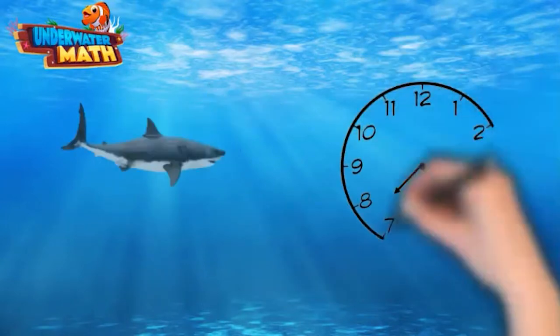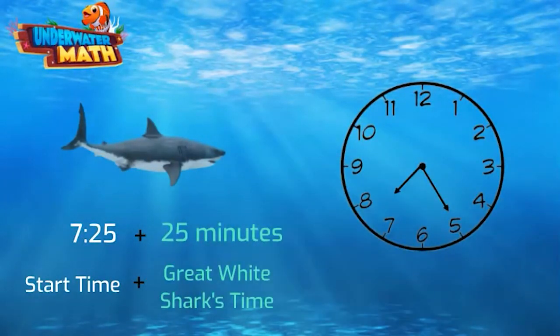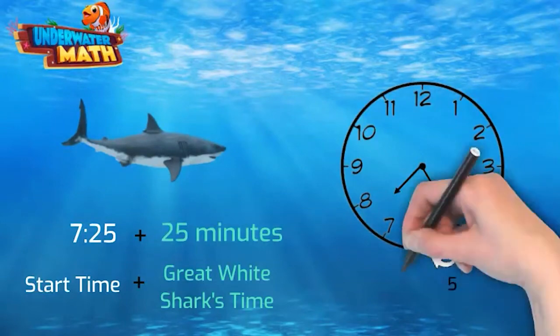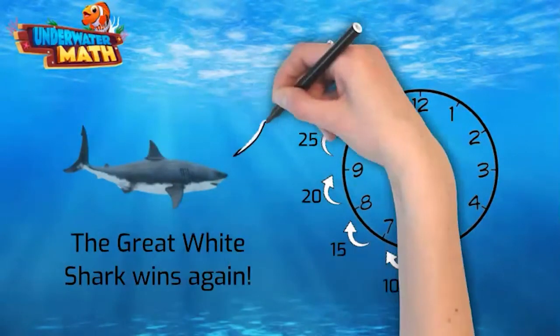Using our 5 minute jumps, we can add 25 minutes onto our start time of 7:25. This lands us at 7:50. This is the time the great white shark finished the race. We solved it once again.